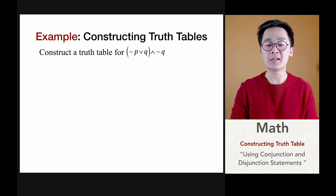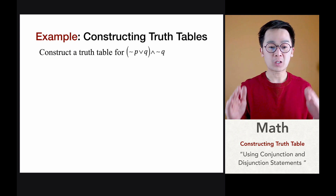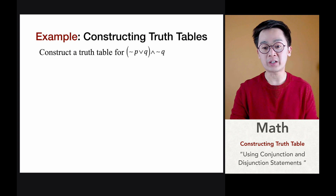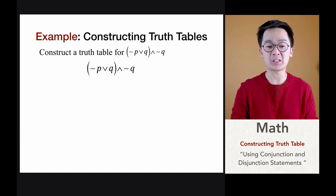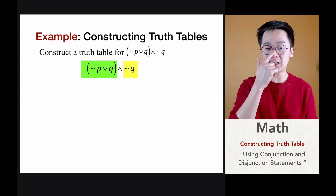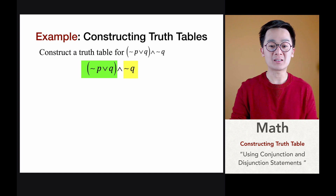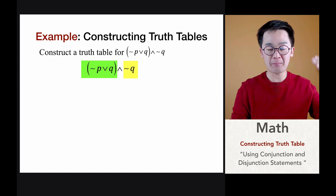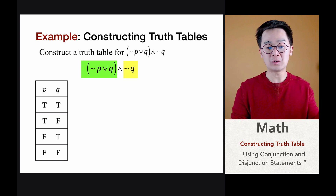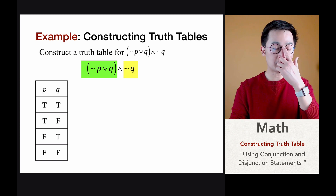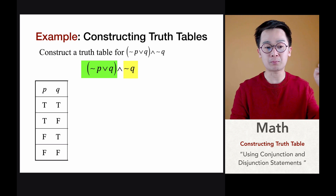Another example of an operation we can build a truth table from is: the quantity of (not p or q) AND not q. Here we have two groups of statements — the ones inside the parenthesis and the negation of q. To create the truth table, we start with the basic combinations for p and q: both true, T and F, F and T, and both false. These are the possible combinations of truth values for two statements p and q.